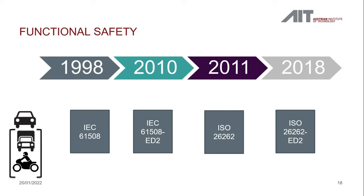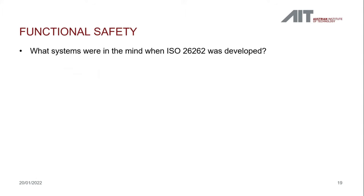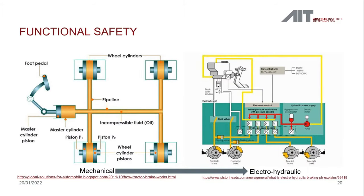The first edition in 2011 had only normal passenger cars in focus, and the complete car industry adopted it. The second edition in 2018 extended the scope to also include trucks and motorcycles. ISO 26262 was designed with the assumption of a driver with some demand — from a mechanical foot pedal to a cylinder, to an electro-hydraulic system with ABS that can modify and adapt braking.